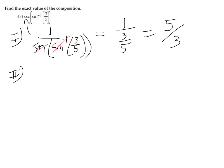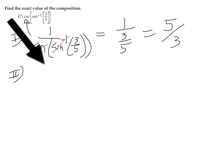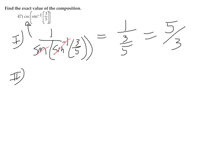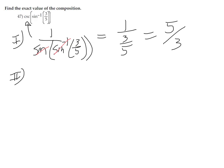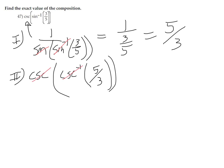Method two: we deal with the arc sine, and the outside doesn't change, but the inside we're going to change to arc secant. When we go from arc sine to arc secant, the number on the inside flips — we get the reciprocal — so three-fifths changes to five-thirds. Then the cosecant and arc cosecant cancel, and our answer is five-thirds.